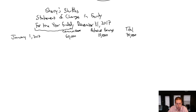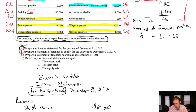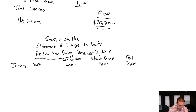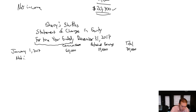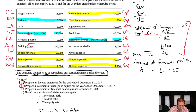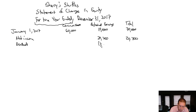Now, what happened during the year? Did I issue or repurchase any common shares? No — the company did not issue or repurchase any shares during the year, so nothing happened to my common shares. What happened to retained earnings? It increases by the amount of the net income and decreases by the amount of dividends. I made $20,700 in net income — I'll add that. I also had dividends of $3,000, which negatively impact retained earnings, so I put them in brackets.